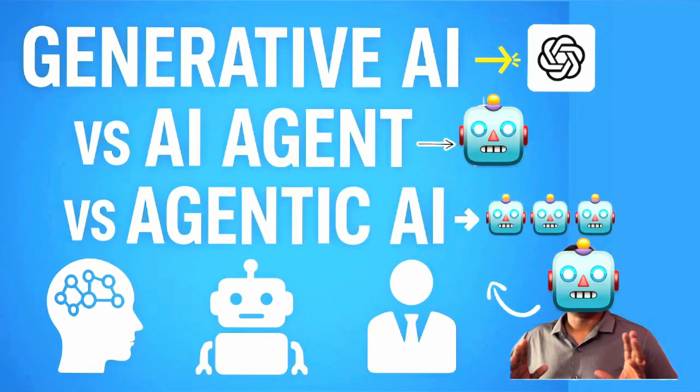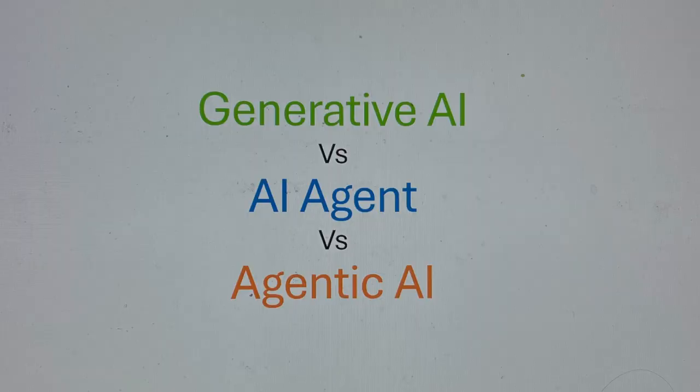Welcome to this session. Today I will explain three important terms in simple language: Generative AI, AI Agent, and Agentic AI.